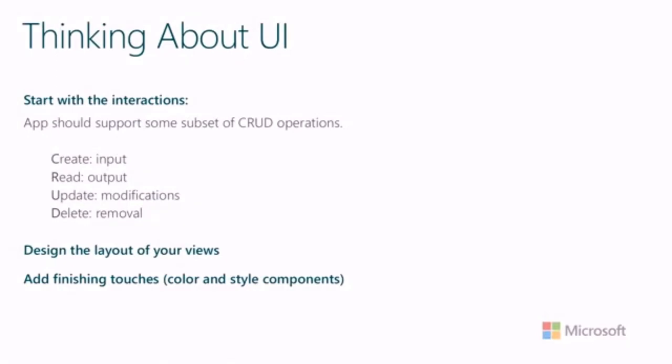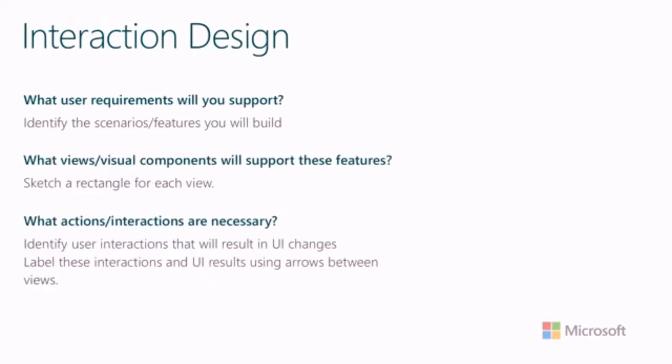The most important thing to identify first is the core functionality that your app will have and how users will interact with it. With web apps, users will be performing actions with information — inputting things, viewing data, modifying and deleting things. Think about which of those operations your app will emphasize and how you can support those operations. From there you can start designing the layout at a high level to support that functionality, and then add the finishing touches with color and style. One way to start is by doing interaction design: identify what requirements your app will support, figure out what visual components and layouts can support those features, and sketch out a high-level visual to depict that interaction.